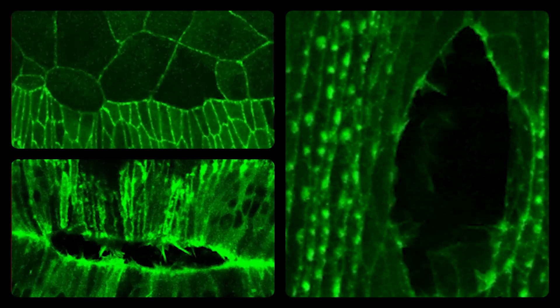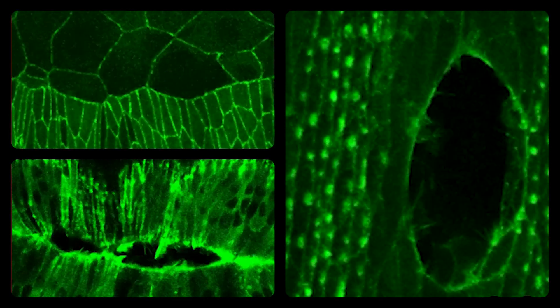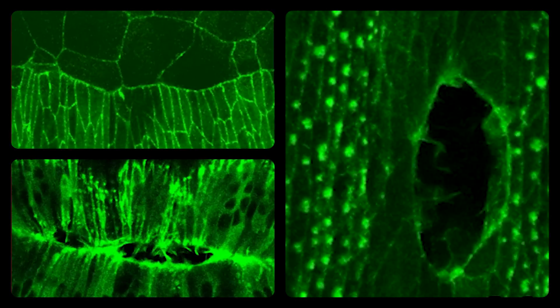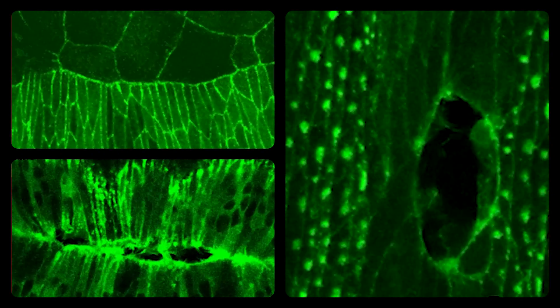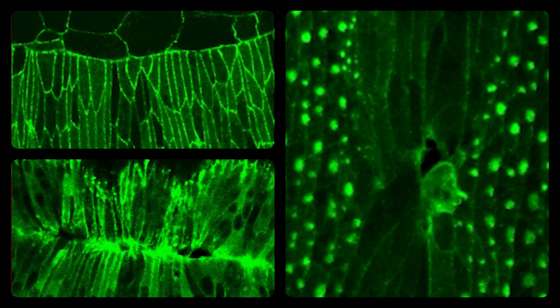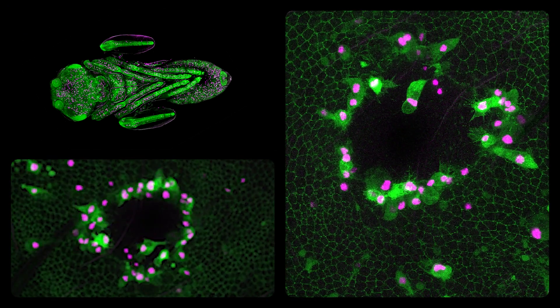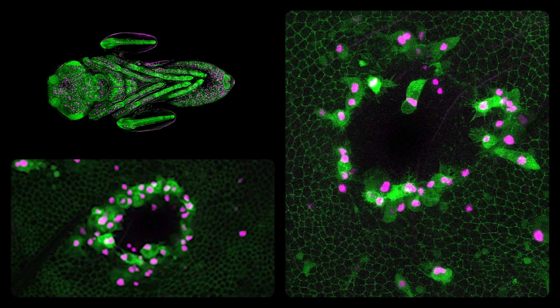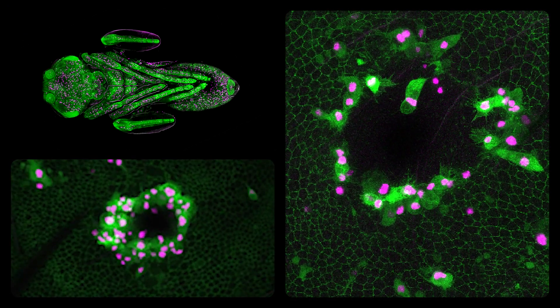Dorsal closure in the fly involves the migration of two epithelial sheets over the surface of the embryo. Those two epithelial sheets move across the surface to seal a hole in the embryo and they have to zipper up to close and seal that hole — a very similar process to wound repair. Ultimately what we want to do is use the insights from our work in the fly to develop new therapeutic approaches to help accelerate tissue repair in the clinic.